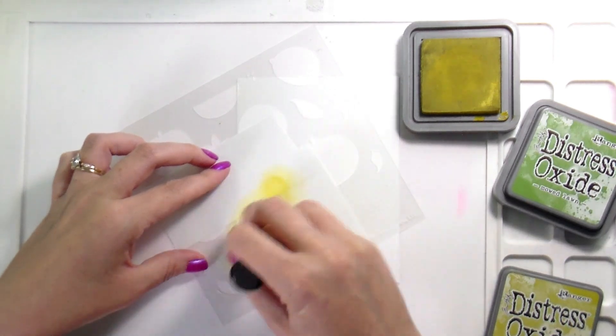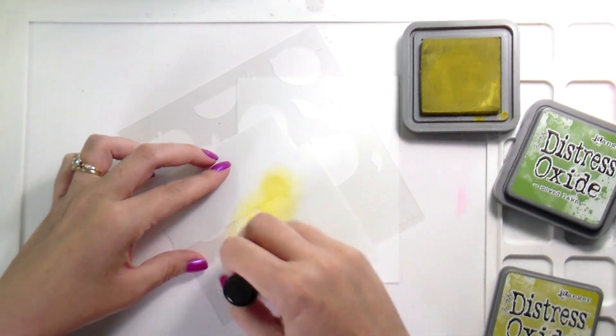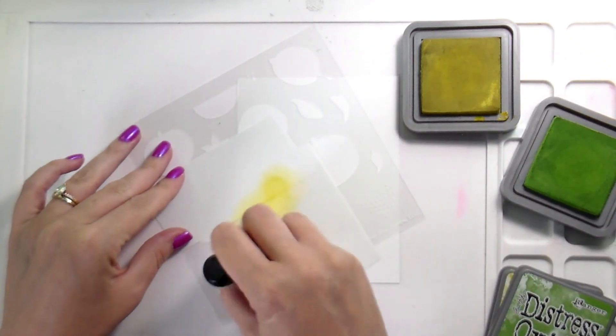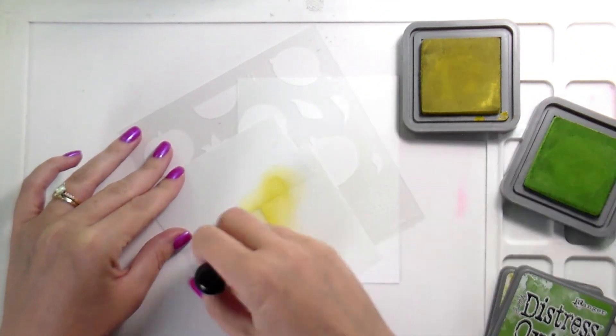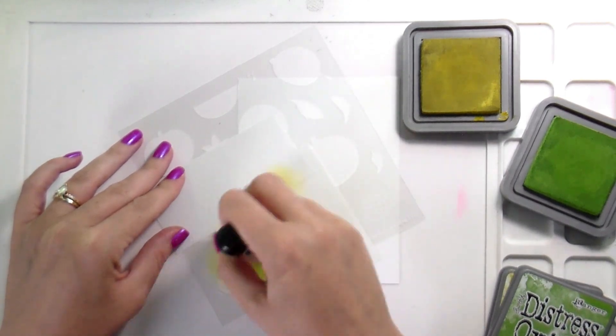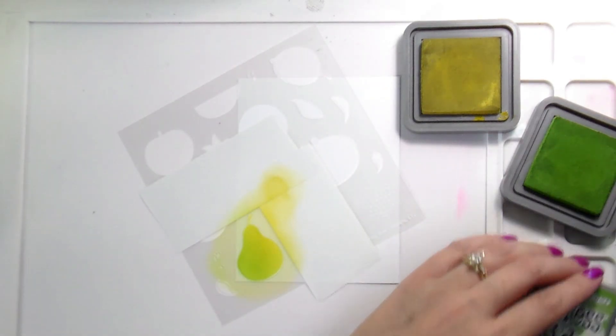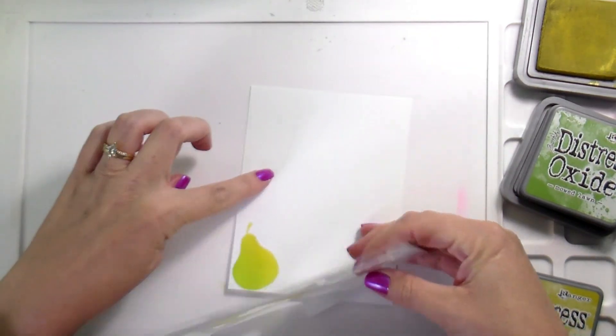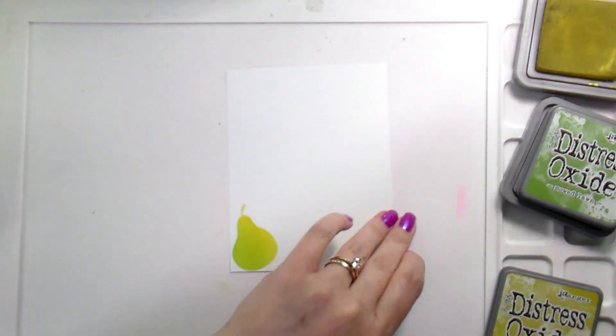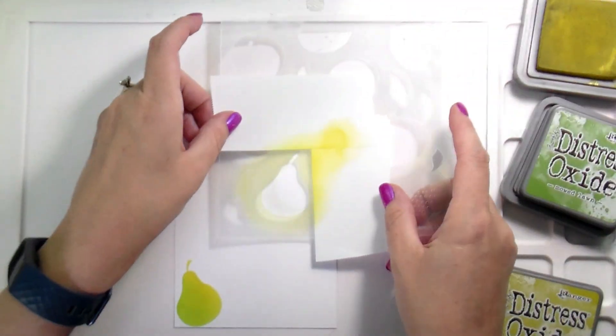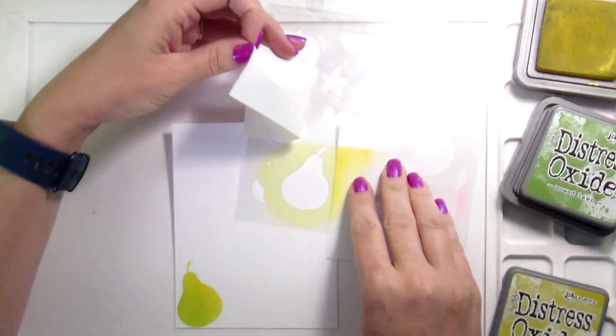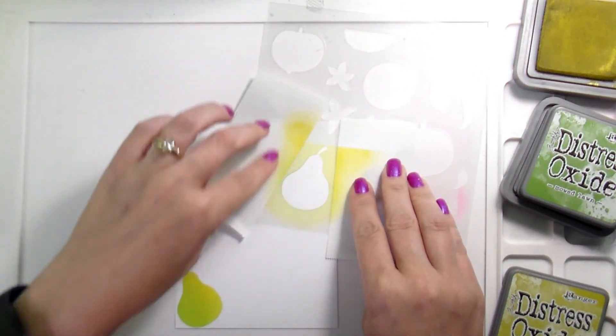Here I'm using Distress Oxides and my freshly picked stencil to create a fun summer background of a bunch of different fruits. I'm using two colors per fruit, and then I'm using my Post-it masking tape which comes on a roll, which is super easy to just rip off the size piece that you need. That's just to mask off the other shapes to make sure I don't get anything where I don't want it.